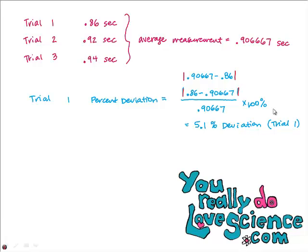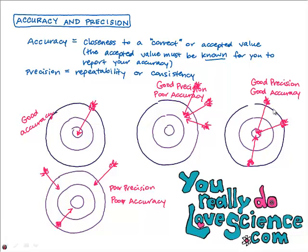I hope this helps you understand accuracy and precision a little better. Before we go, I'll add one final definition: precision is how close the measurements are to each other — not necessarily to the accepted value or the right answer, but how close the measurements are to each other. Hopefully you understand accuracy and precision a little bit better, and I hope you do well on your next quiz or test.